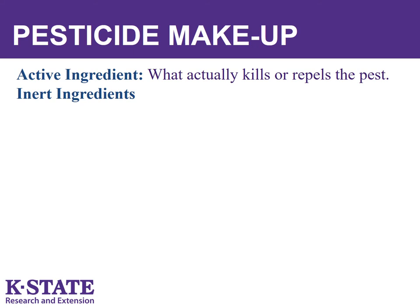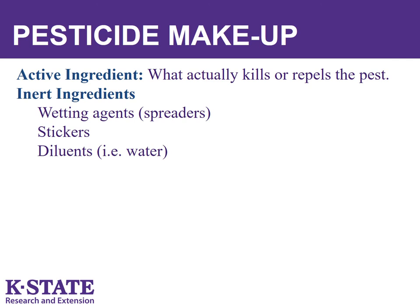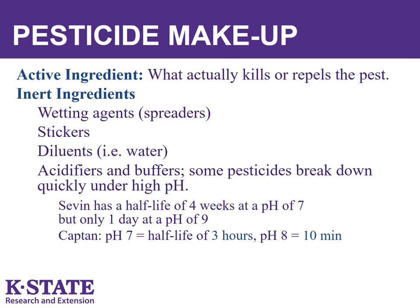Pesticides are composed of both active ingredients and inert ingredients. Active ingredients are materials that actually kill the pest. A single product may contain one active ingredient or several. Inert ingredients do not directly kill the pest but may help the product be more effective. For example, wetting agents allow the spray to coat a waxy leaf rather than beading up. Stickers make the spray less likely to wash off during a rain. A diluent is usually either water or an oil in which the active ingredient is dissolved or suspended. Acidifiers and buffers are usually added to the spray to stabilize the pH so that it is less likely to break down.